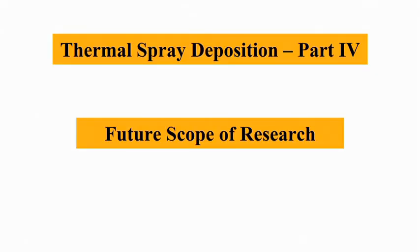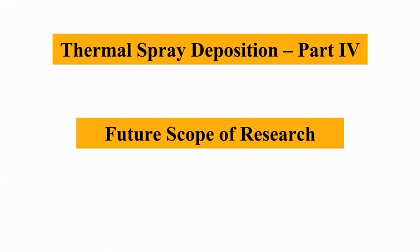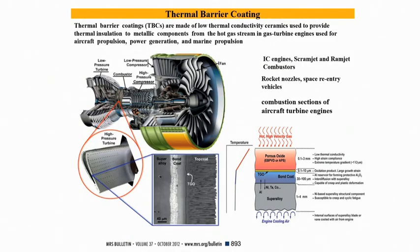Welcome to part 4 of Thermal Spray Deposition Technique, where we will discuss about the scope of research and how to plan for research studies of different materials development by thermal spray deposition route. In this talk I will discuss research results on development of two different types of coating: one is thermal barrier coating and another is a typical bioactive coating for implant applications. Initially I will discuss about the thermal barrier coating.